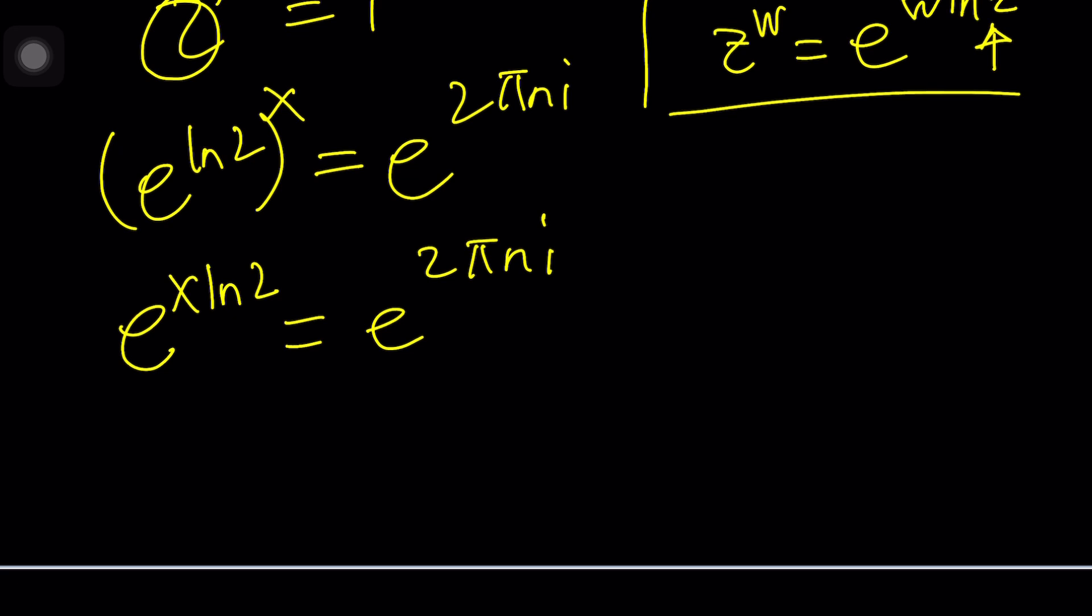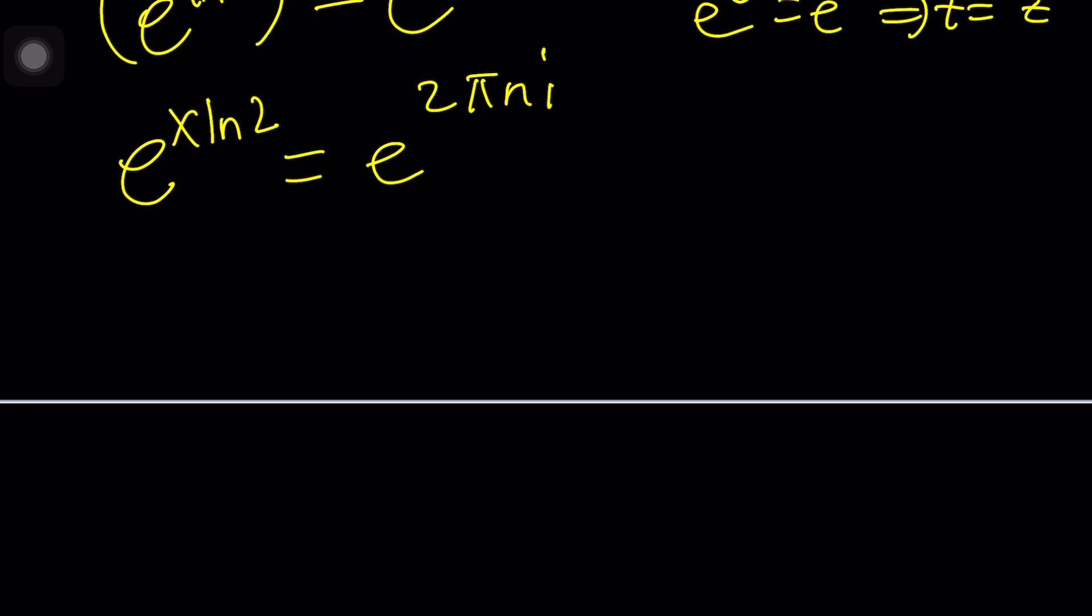We can do the following. If e to the power t is equal to e to the power z, this implies t is equal to z. Even in the complex world, it should. But, with a word of caution, you should never forget the fact that we have e to the power 2 pi n i. But in this case, there's no reason to add another 2 pi n i, because it's already that.